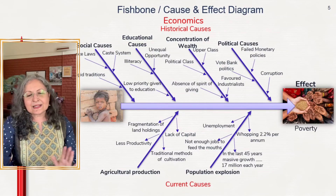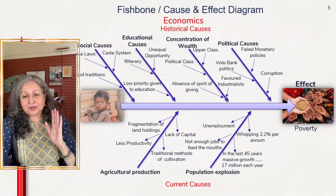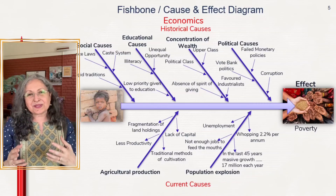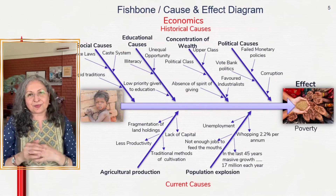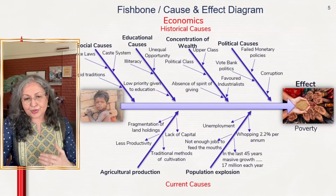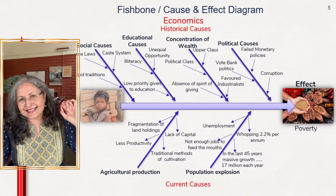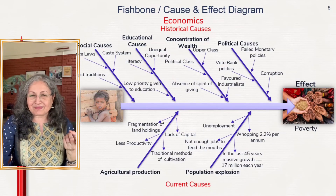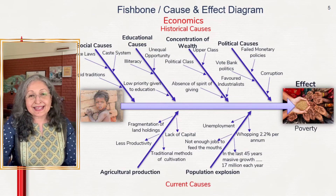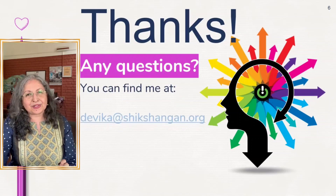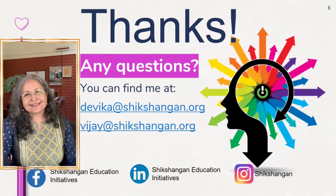The last current cause is population explosion — a whopping 2.2% per annum — but in the last 45 years we've seen a lot of growth, though India is now doing well and has almost replicated the rate of reproduction. That's what a fish bone analysis looks like — the fish bone analysis, cause and effect diagram, or the Ishikawa diagram. That was the second graphic organizer. If you like what we're presenting, do like and subscribe to our YouTube channel at Shikshangan, and tap the bell for new episodes every week.